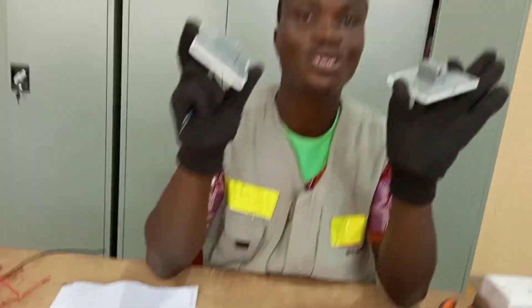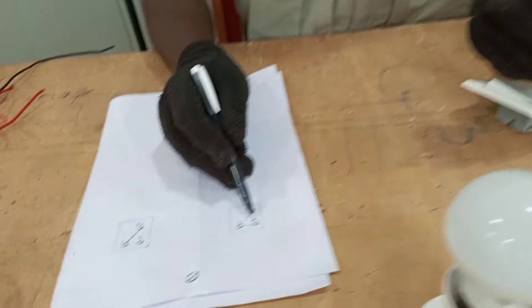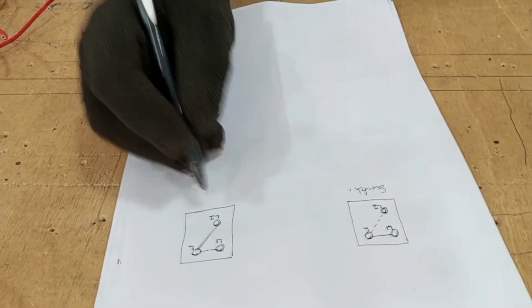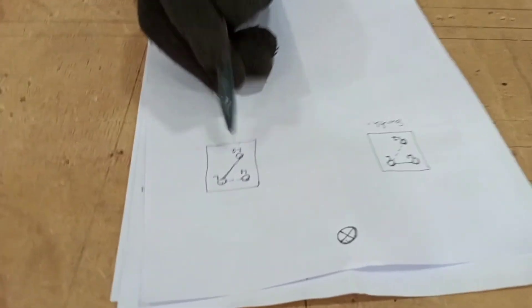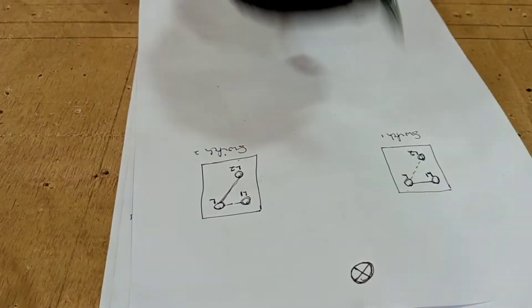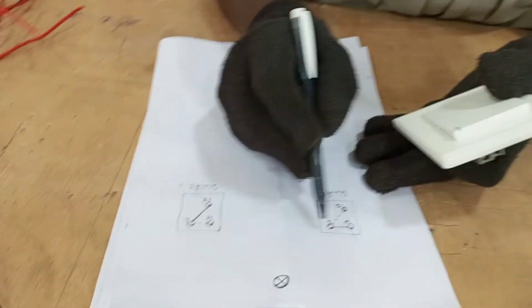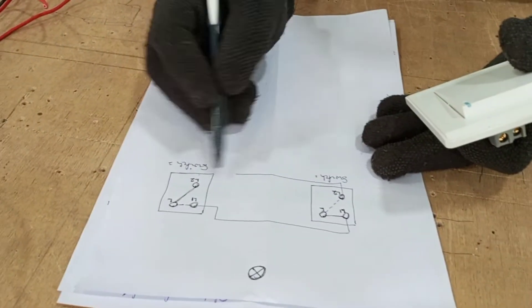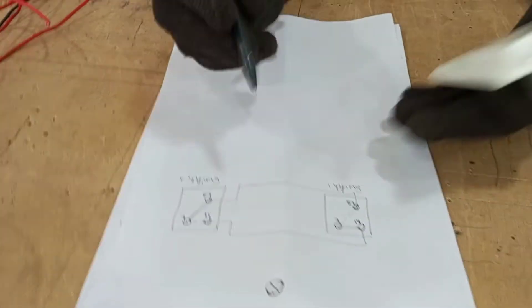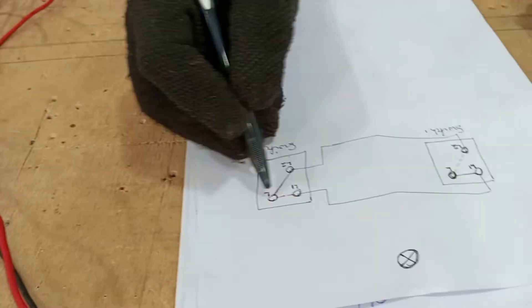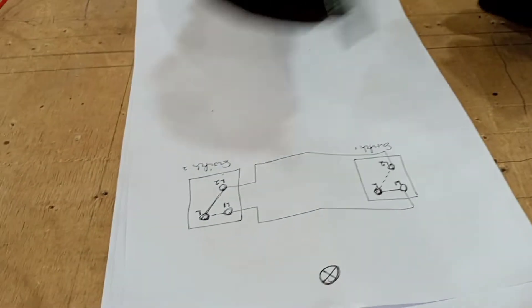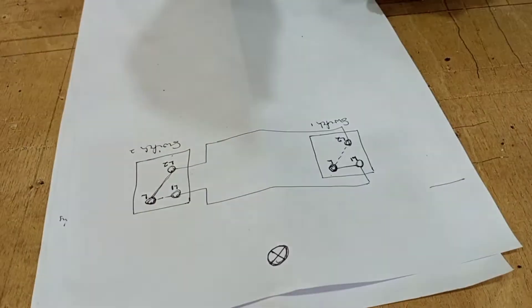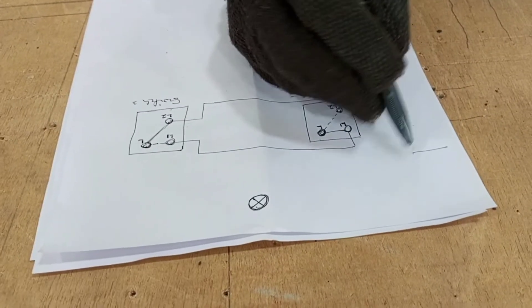For two-way switching, you will need two two-way switches. L1 and L2 from switch 1 will connect to L1 and L2 at switch 2. So we connect L1 here to L1 there, and then we connect L2 here to L2 there. That will leave the L terminal on each switch — one of these L terminals will be connected to the feed, which is usually taken from a fuse or a circuit breaker.